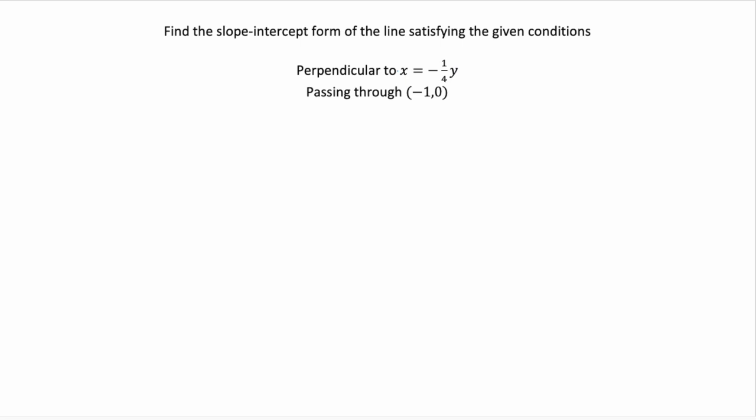Well, to find a line that's perpendicular to another line, first we need to know the slope of our given line. And to find the slope, we need to get our line into slope intercept form, or y equals mx plus b.